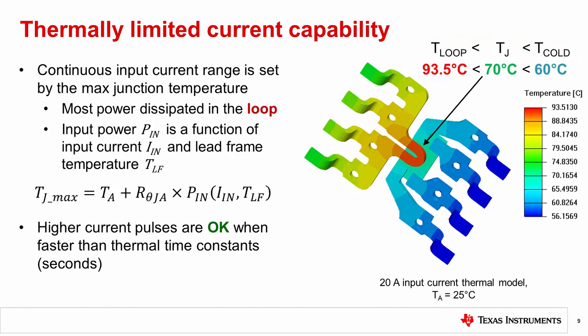Maximum junction and package temperatures limit the allowable power dissipated in the current path. Because the lead frame has a resistive temperature coefficient, total power input is a function of both current and lead frame temperature. This power must be dissipated by the thermal resistance of the device to the ambient environment, known as R theta J A, and is effectively added to the ambient temperature. This means that the continuous current capability of the device declines at higher ambient temperatures and is a strong function of the thermal environment such as the PCB layout, airflow, and heat sinks.